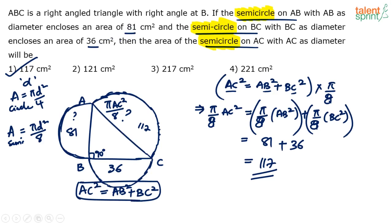So be clear. Even if you use this as a shortcut, be very clear and don't blindly assume it is always a sum. The answer is 117, option 1. Try it out once again yourself to be clear with the concept. In the exam, you should be solving this in about 3 to 5 seconds using the shortcut, to save time on geometry questions.